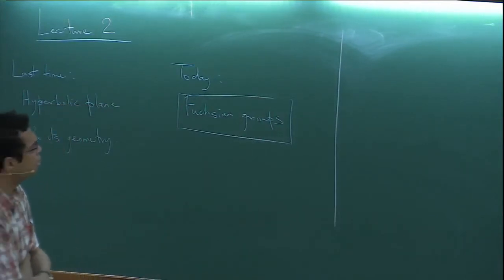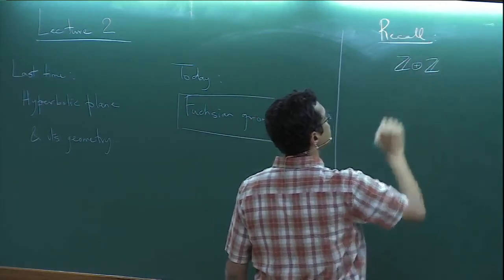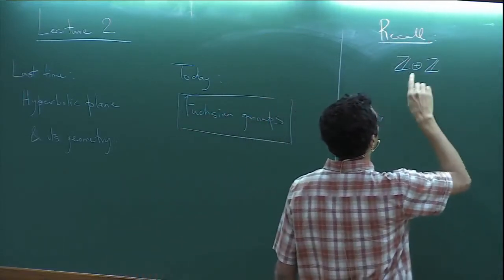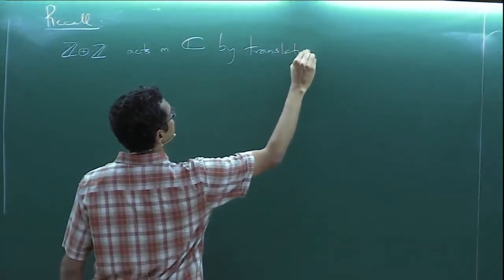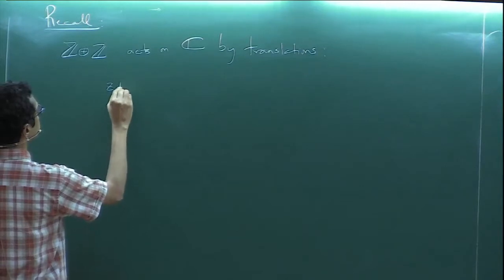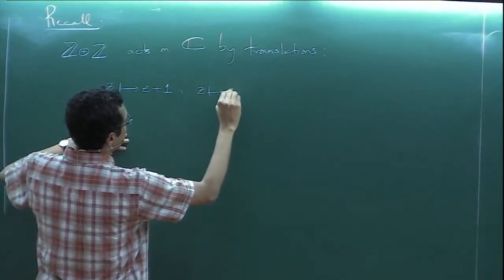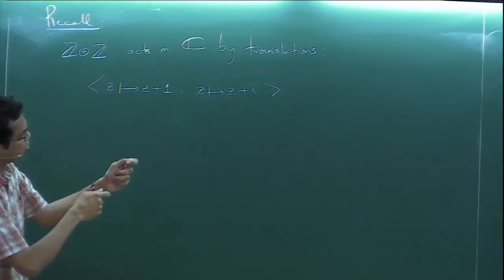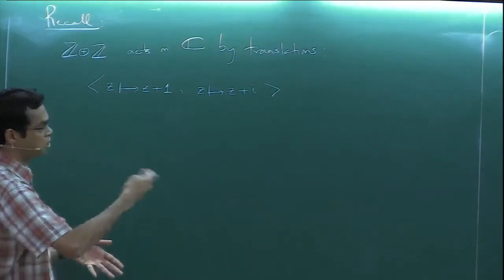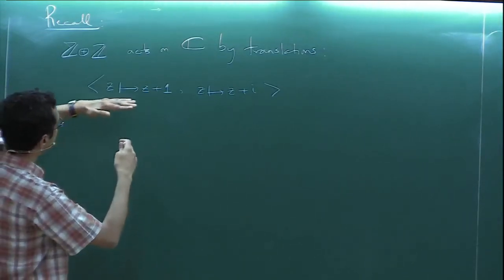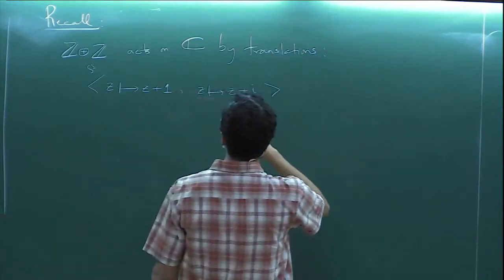As a motivation, let me recall some construction you already know. If you look at Z plus Z, this group acts on the complex plane by translations. If you take the two translations z going to z plus 1 and z going to z plus i, both of these are automorphisms of the complex plane. The group generated by them is Z plus Z because these commute, and this acts on the complex plane.